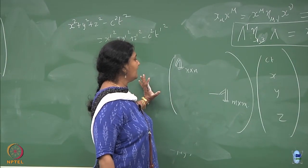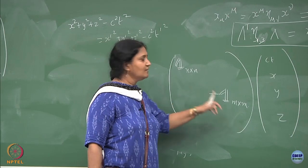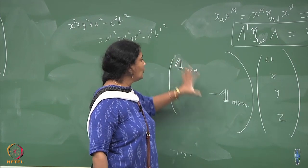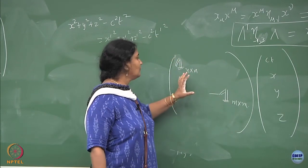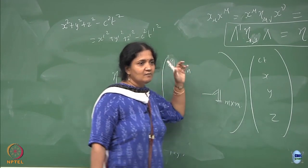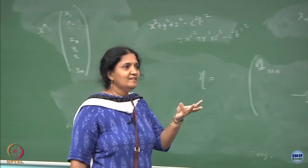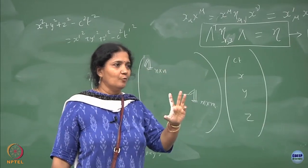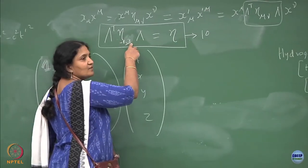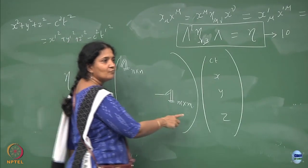In our earlier case we had n to be 3 and m to be 1 — 3 were positive elements, 1 was negative element. How I write it is not important; you can juggle around the diagonal entries. N of them are positive entries, m of them are negative entries. In the earlier notation for 3+1 dimensional spacetime, the ct entry was negative and 3 were positive.